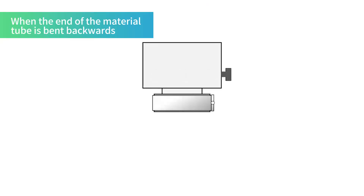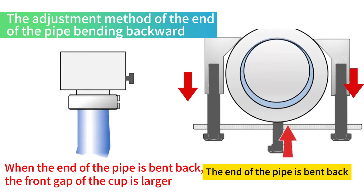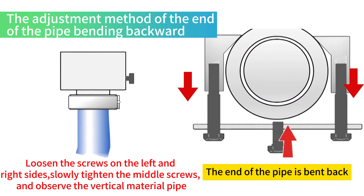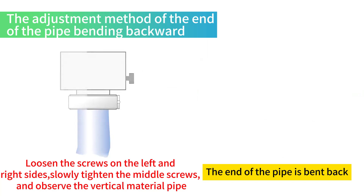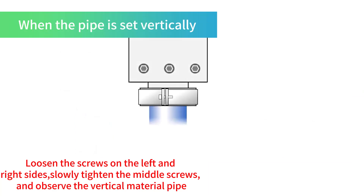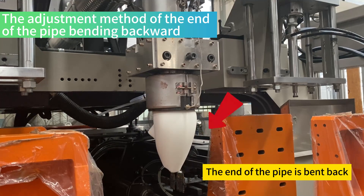When the end of the material tube is bent backwards, the front gap of the cup is larger. Loosen the screws on the left and right sides, slowly tighten the middle screws, and observe the vertical material pipe. This is the adjustment method for the end of the pipe bending backward.